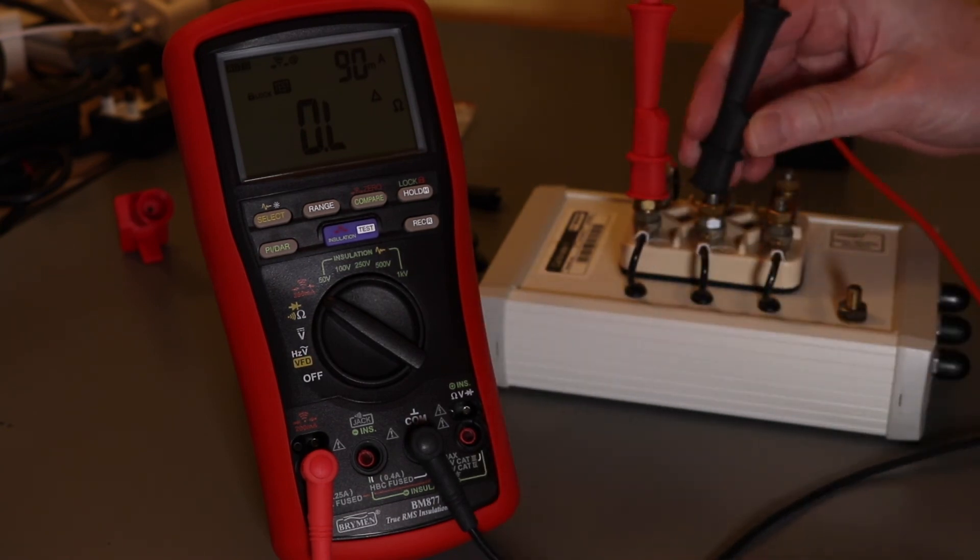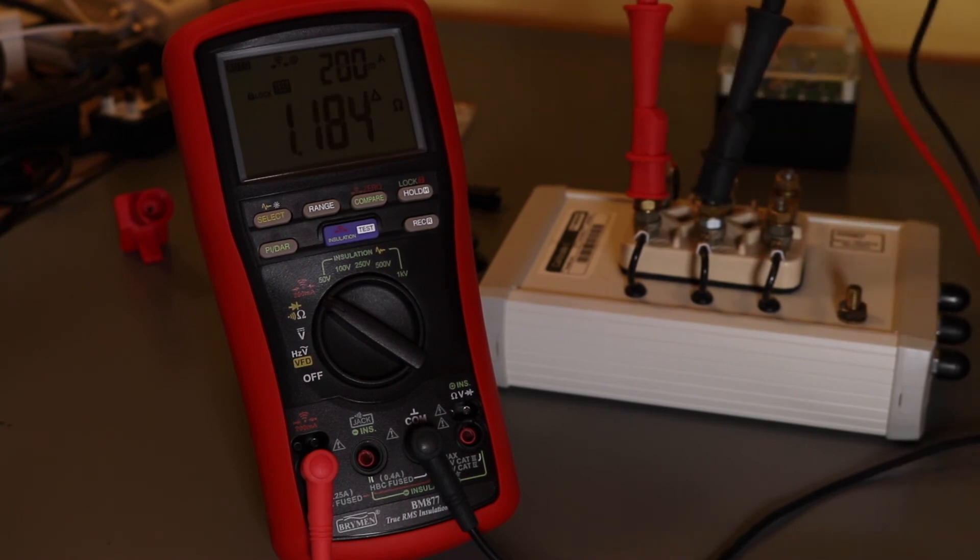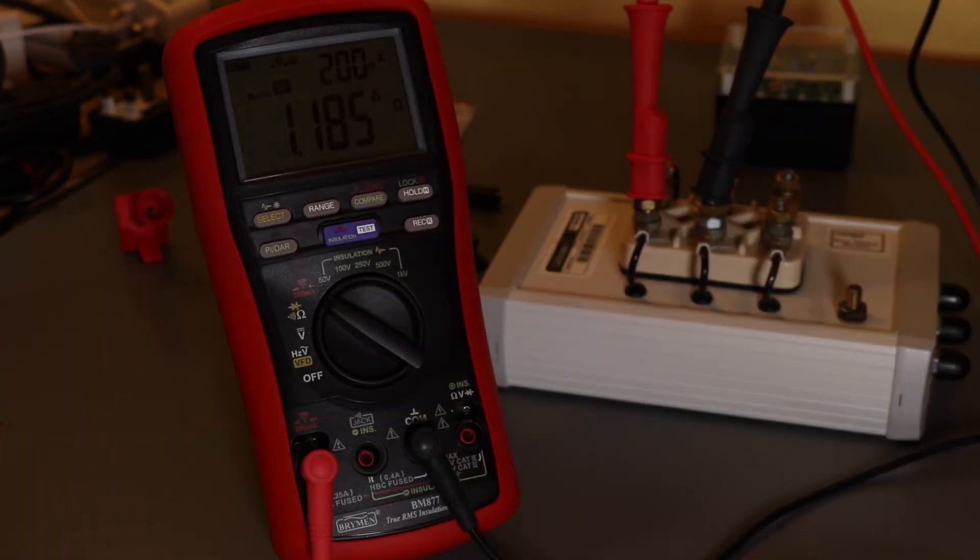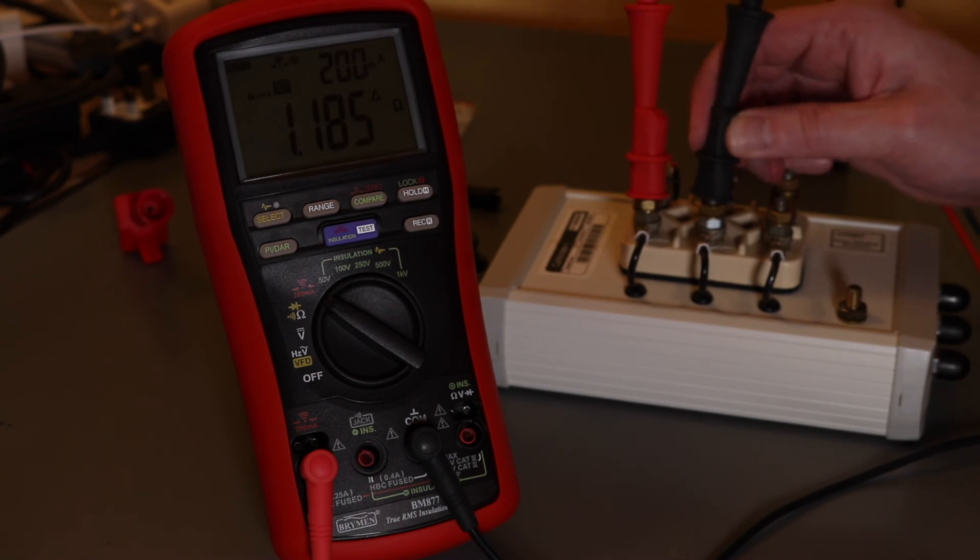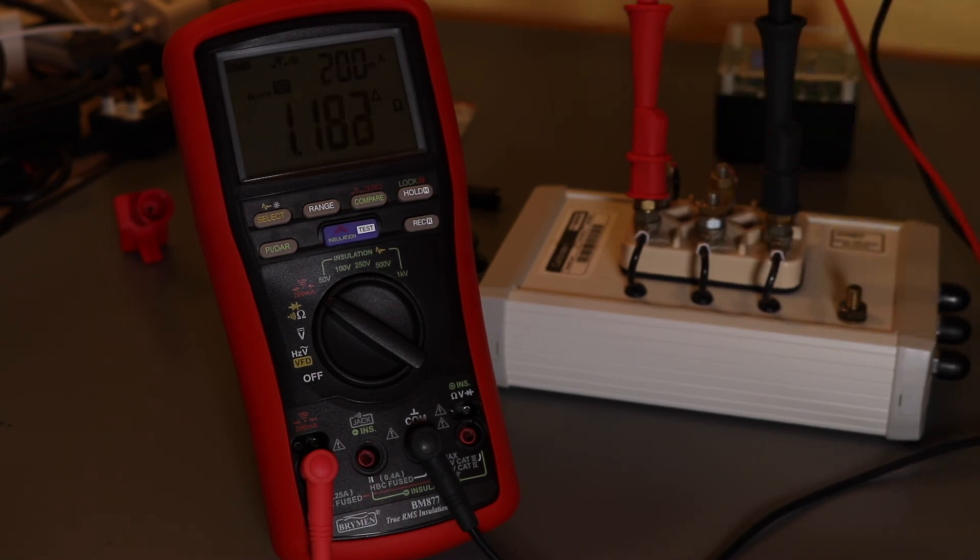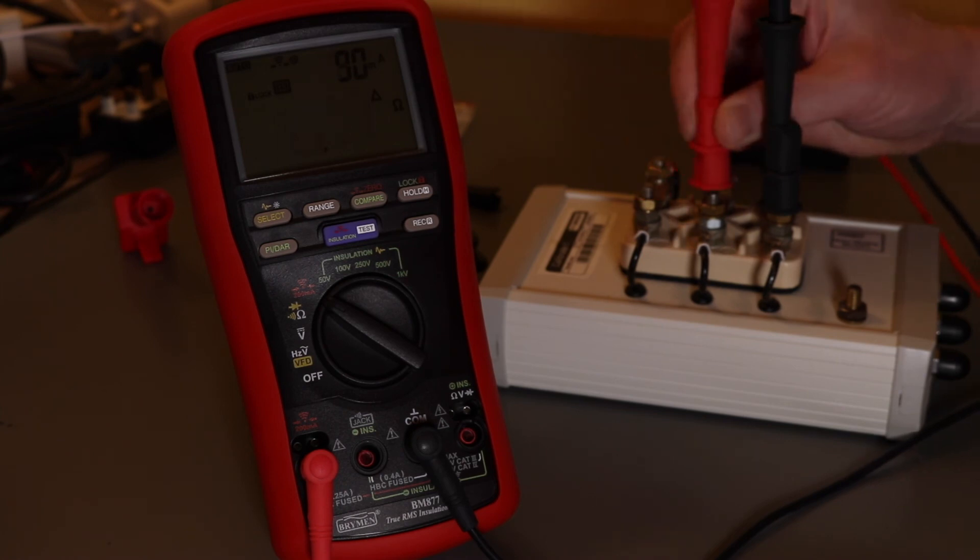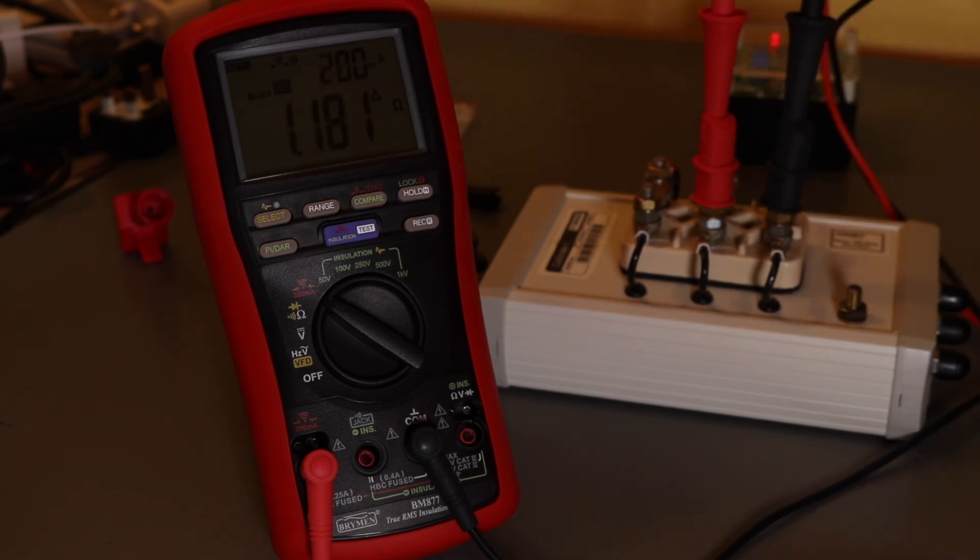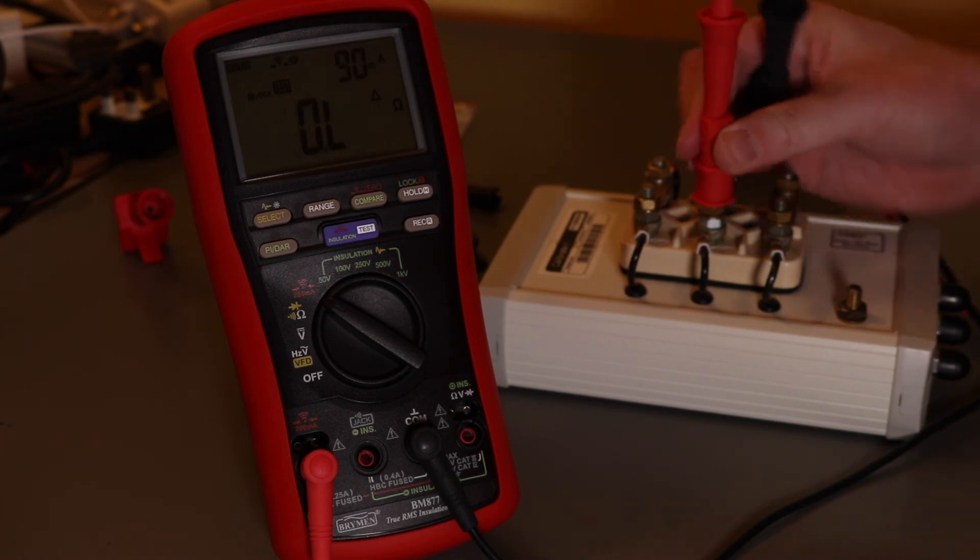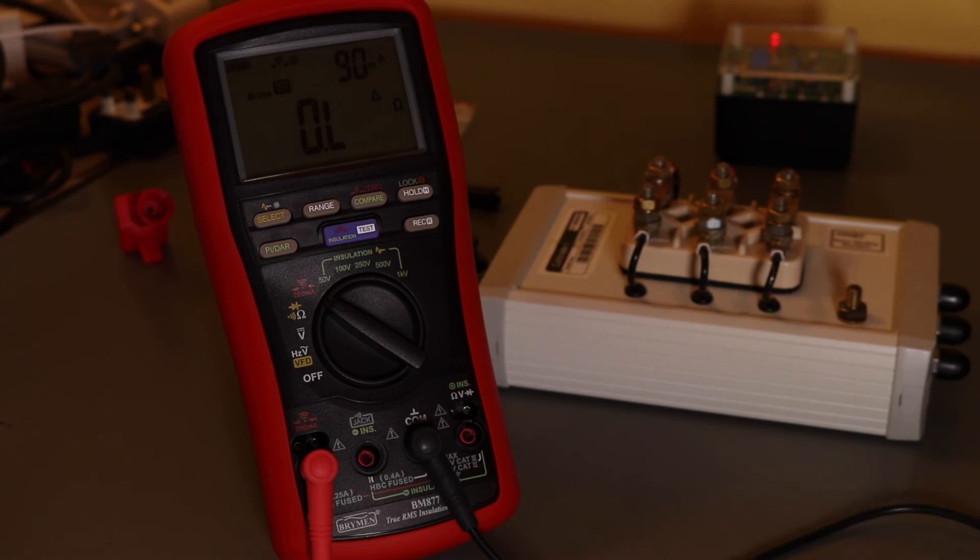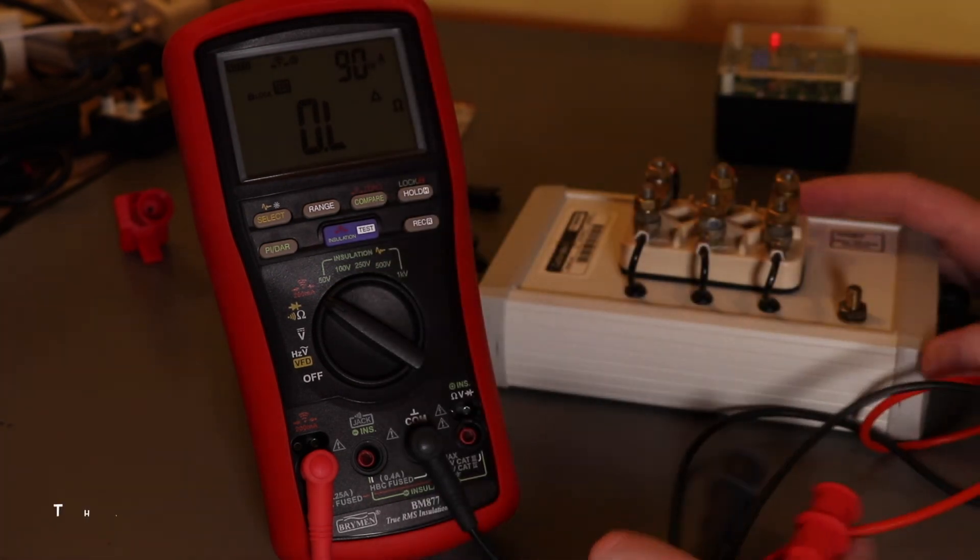So I think this should be 1.18 if I remember correctly. There you go, 1.18, 1.179. So yeah, pretty good accurate on the earth bond reading really. I'm quite impressed with that. That's probably just as good as the Keysight unit.